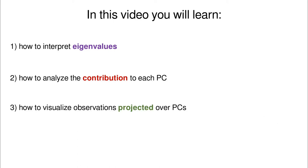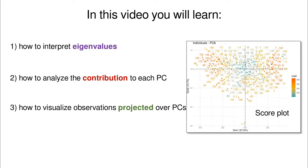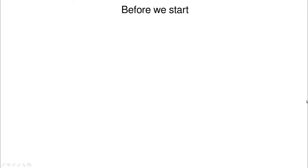We'll also learn how to visualize observations by projecting them onto the PCs. We are rotating the axis, and in this new axis we're going to see all the information colored with different attributes, so we can have multi-dimensional information in a 2D plot.